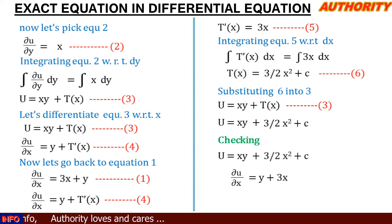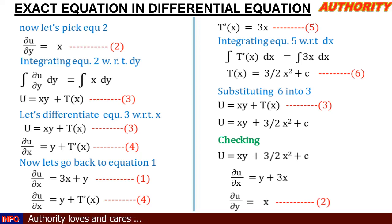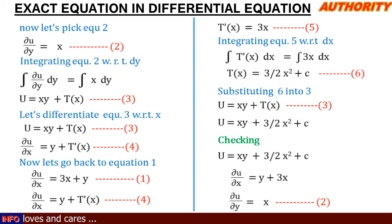Also, differentiating u partially with respect to y: xy gives x, (3/2)x² has no y so gives zero, and c gives zero. So ∂u/∂y = x, which matches equation 2. This is exactly how to solve an exact differential equation. Thank you for watching — please subscribe, like, and share our videos.